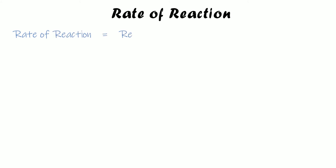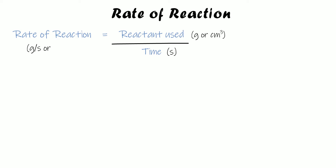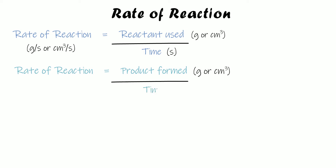The first equation is: rate of reaction equals reactant used divided by time. Reactant used can be measured in grams if it's a solid, or centimetres cubed if it's a gas. Time is always measured in seconds, so the unit is grams per second or centimetres cubed per second. The second equation is: product formed divided by time — again in grams or centimetres cubed — giving the same units.